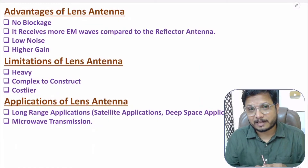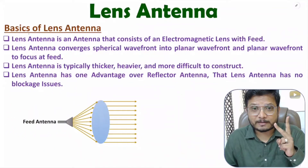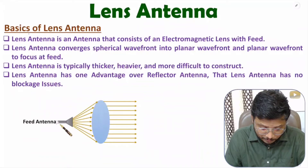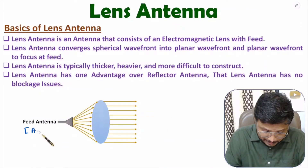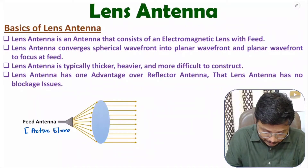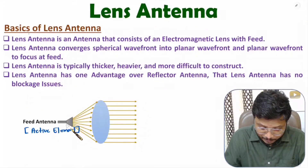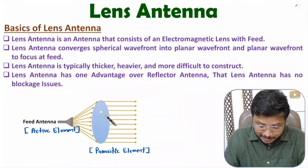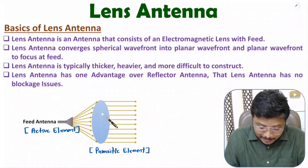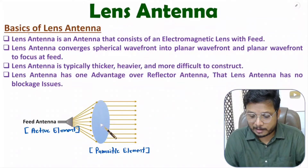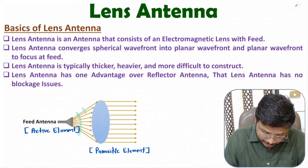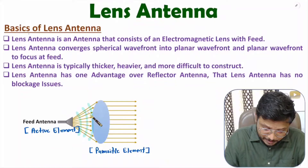Let us begin with the basics of lens antenna. Lens antenna has two elements: one is the feed antenna and the second is the lens. The feed antenna is the active element — we provide supply through this feed. The lens is a parasitic element because it is not connected to the feed. The job of the lens is to convert spherical wavefront into planar wavefront.